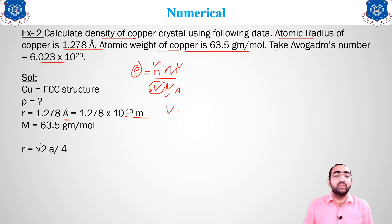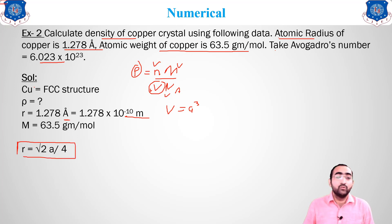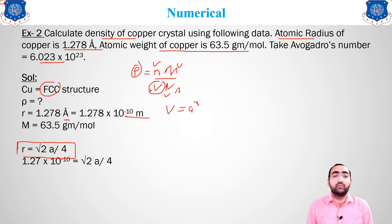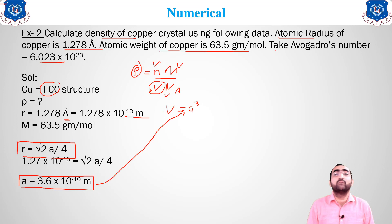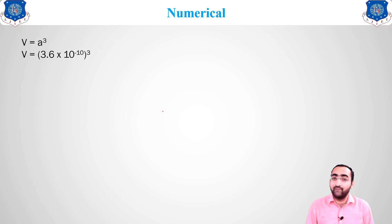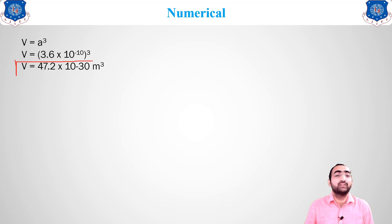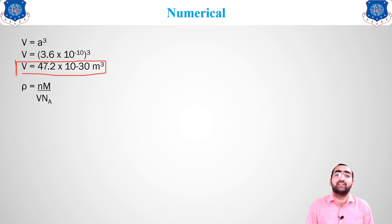Volume = a³, but we don't have 'a', so we use the FCC radius relation: r = √2 · a / 4. Placing r = 1.278 × 10⁻¹⁰ m gives a = 3.6 × 10⁻¹⁰ m. Now placing this in the volume formula: V = a³ = (3.6 × 10⁻¹⁰)³, which gives V = 47.2 × 10⁻³⁰ m³.